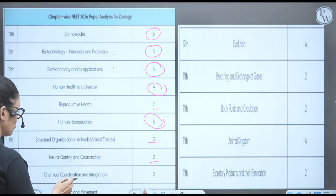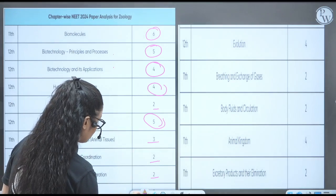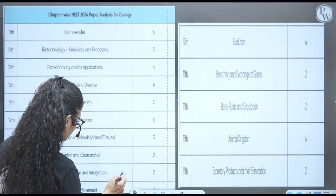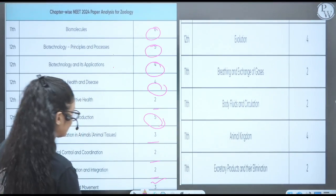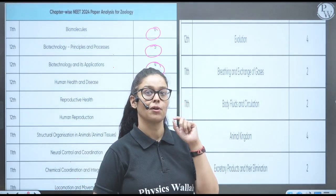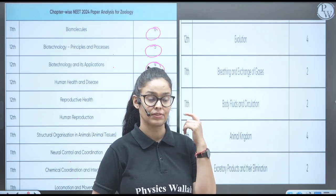Neural control coordination, two questions. Chemical coordination integration, two questions. And from the locomotion, from the locomotion and movement, they have asked three questions. From the evolution, four questions. So from that ecology and genetics, they have asked six from the whole unit.